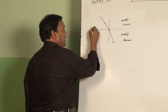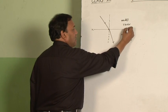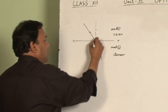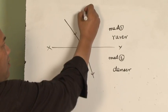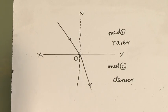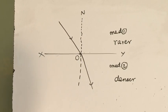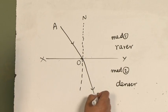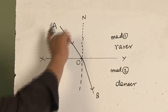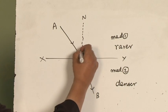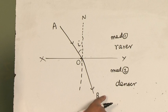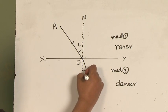XY is the refracting surface, O is the point of incidence, ON is the normal at the point of incidence, AO is the incident ray, and OB is the refracted ray. The angle made by the incident ray with the normal is the angle of incidence; the angle made by the refracted ray with the normal is the angle of refraction.